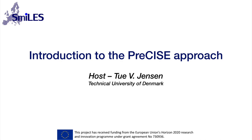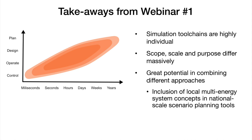I see a couple of names recognized from our previous webinar. The main takeaways from that webinar are that the simulation tool chains we use when doing energy system research simulations are highly individual, and they differ largely in scope, scale, and purpose. There is great potential in combining different approaches — for example, including local mobility energy system concepts within national scale scenario planning.